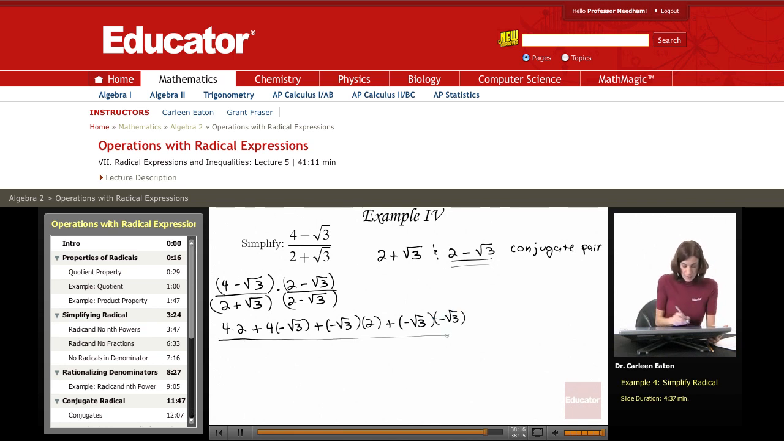The denominator is a little bit easier because this denominator is in the form a plus b, a minus b. It's the product of the sum and difference, which gives me a squared minus b squared. Here, a equals 2, b equals the square root of 3. So that's going to give me a squared, which is 2 squared, minus the square root of 3 squared.